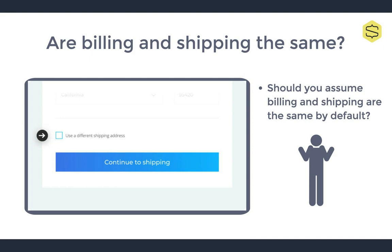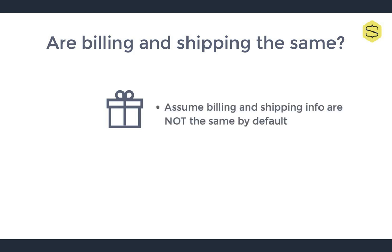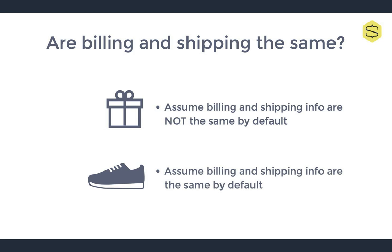But here's some practical advice. If your product is typically bought as a gift for someone else — things like flowers, engraved items, or gift baskets — then assume that billing and shipping information are not the same, but allow the client to clarify otherwise if needed. On the other hand, if your product is typically something a client buys for themselves, like shoes or clothes, then assume that billing and shipping information are the same, but allow the client to change it if needed. It's impossible to know all of your customers' individual intent, but you should have a pretty good idea based on your audience research.